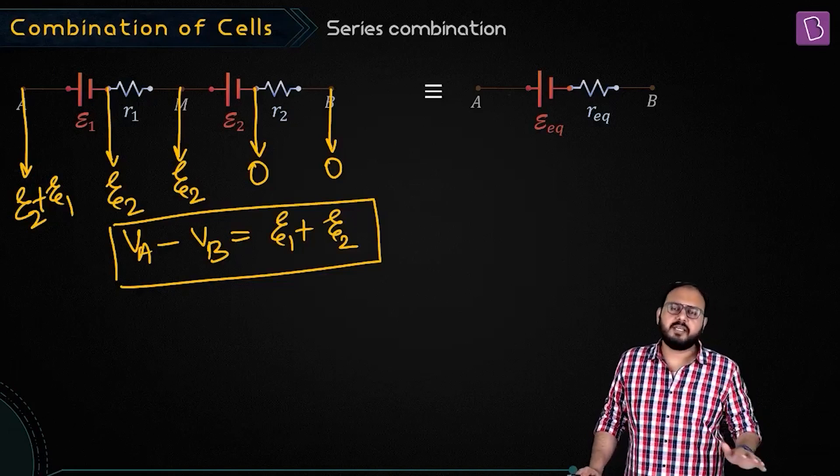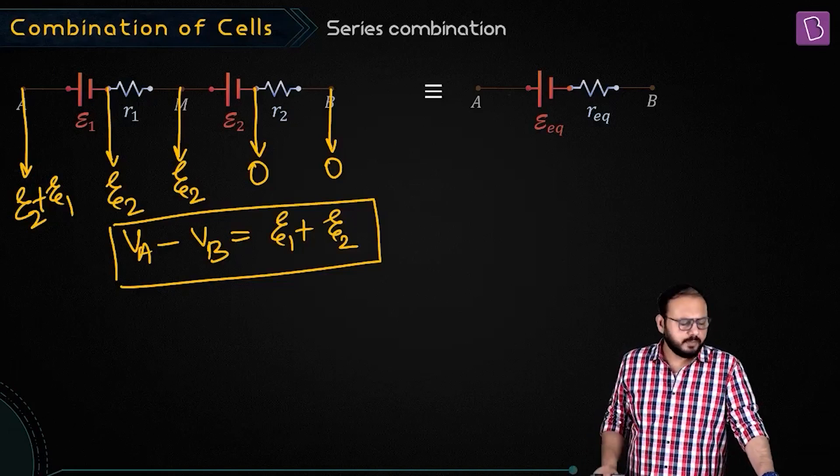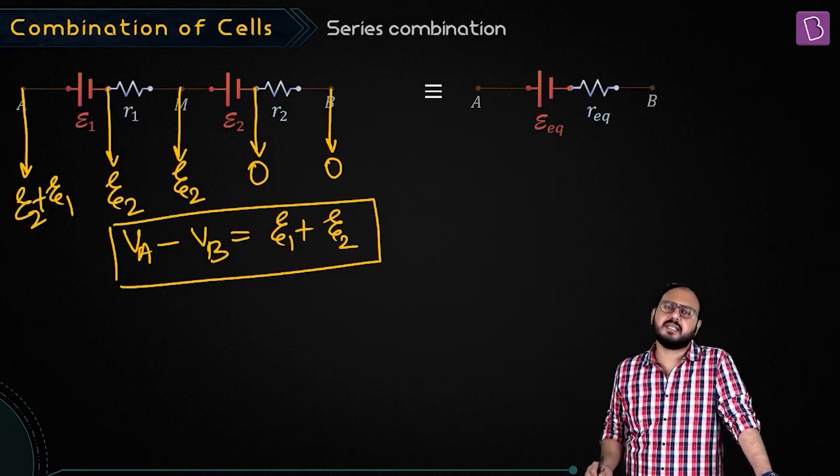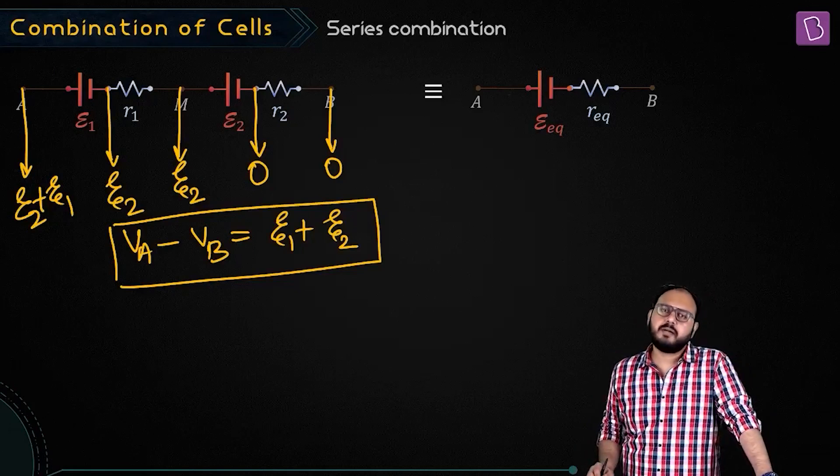If there were three, what would have happened? Student: Algebraic sum. Good. And what about the resistance part? Student: Resistances are in series. They enjoy the same current.